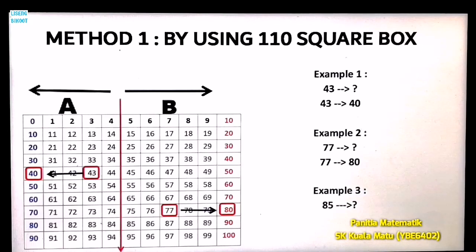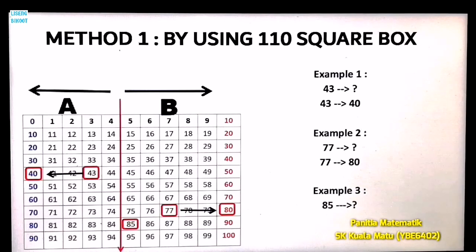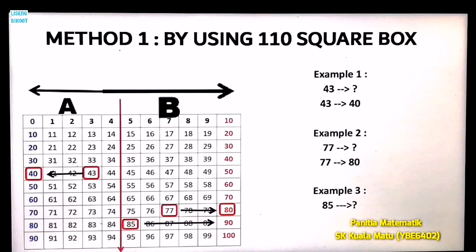Now Example 3: round number 85 to the nearest ten. Find number 85 inside the box and circle it. Number 85 is in Area B. Draw the arrow — the arrow points to number 90, so the answer is 90.